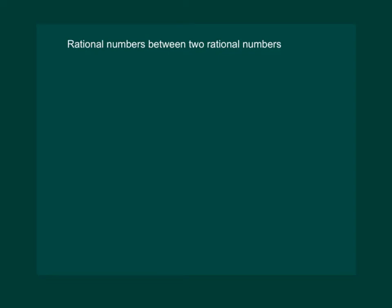Let us learn how to find rational numbers between two rational numbers. Firstly, let us understand — if we have to find natural numbers between 1 and 5, we know that 2, 3 and 4 are the natural numbers which lie between 1 and 5.